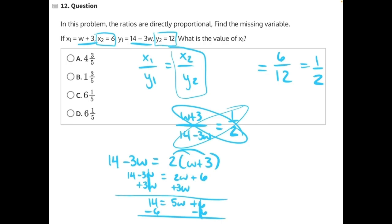leaving us with 8 equals 5w. And last step, 5 is being multiplied to w, so we need to do the opposite and divide both sides by 5. And we'll end up with 8 over 5 equals w. Now, to simplify this, 5 goes into 8 one time with 3 left over: 1 and 3 fifths.